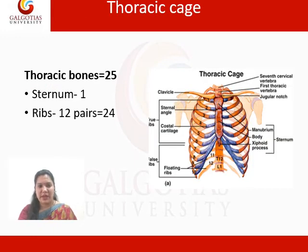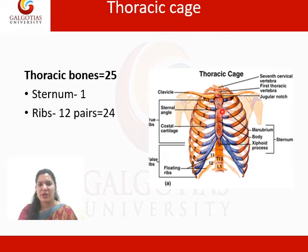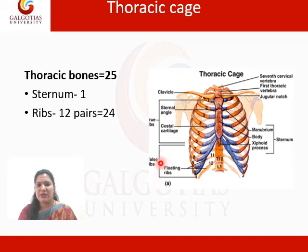Next is the thoracic cage. The thoracic cage is comprised of 25 bones. One is the sternum — the chest bone in the middle. And there are 12 pairs of ribs. The first seven pairs are called true ribs. The next 8th, 9th and 10th are called false ribs. And the 11th and 12th pair are called floating ribs.